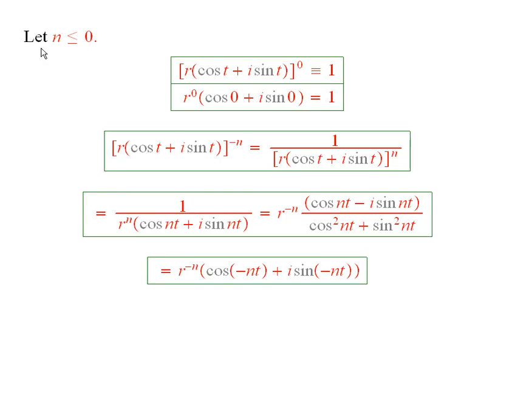This is about whether De Moivre's Theorem holds for all integer n, and I'll show that it does. If n equals 0, then by definition, this to the 0 is defined to be 1.